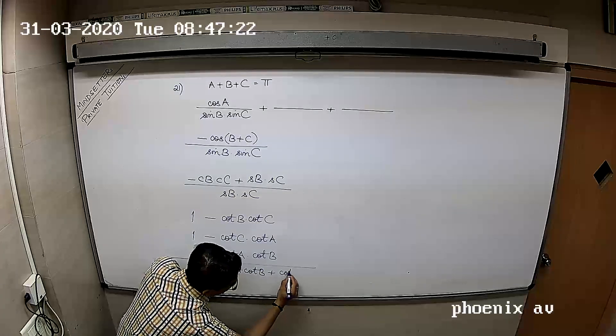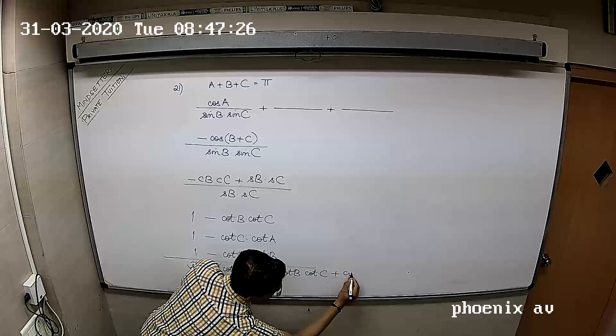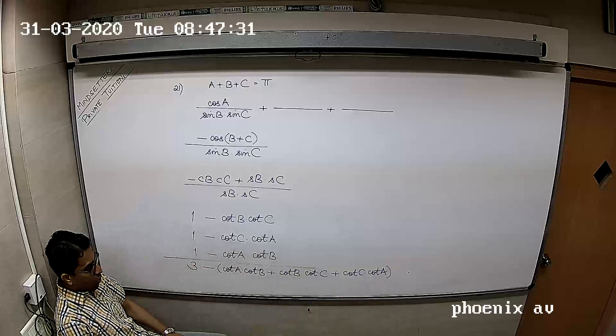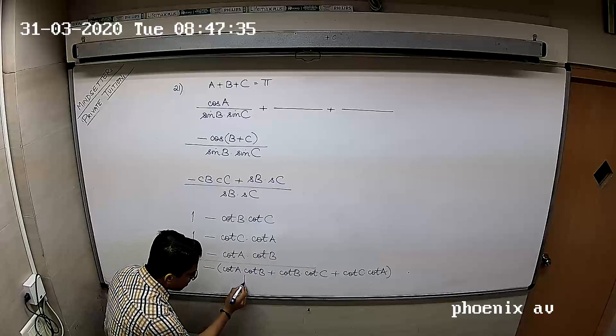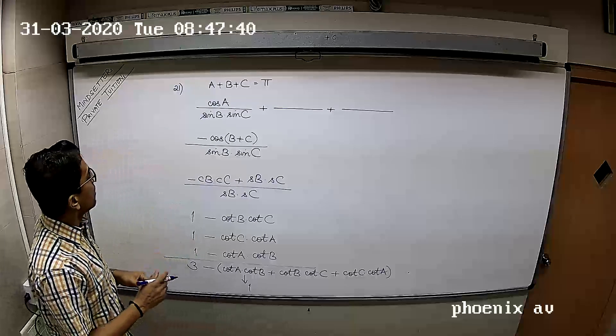Now this part, cot A cot B plus cot B cot C plus cot C cot A, is equal to 1. Why is that part equal to 1? Do you know tan A plus tan B plus tan C equals tan A tan B tan C?